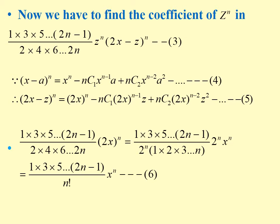Taking the first term, it is (1·3·5···(2n-1))/(2·4·6···2n) times (2x) whole power n. This can be written as (1·3·5···(2n-1)) divided by, taking 2 from each term in the denominator giving 2 power n, times (1·2·3···n) times 2 power n times x power n. This simplifies to (1·3·5···(2n-1)) divided by n factorial, times x power n.